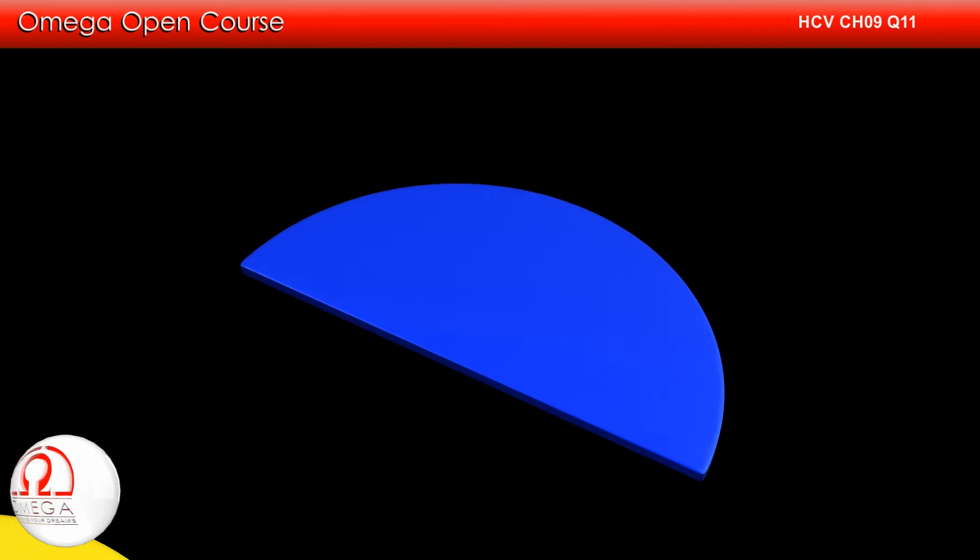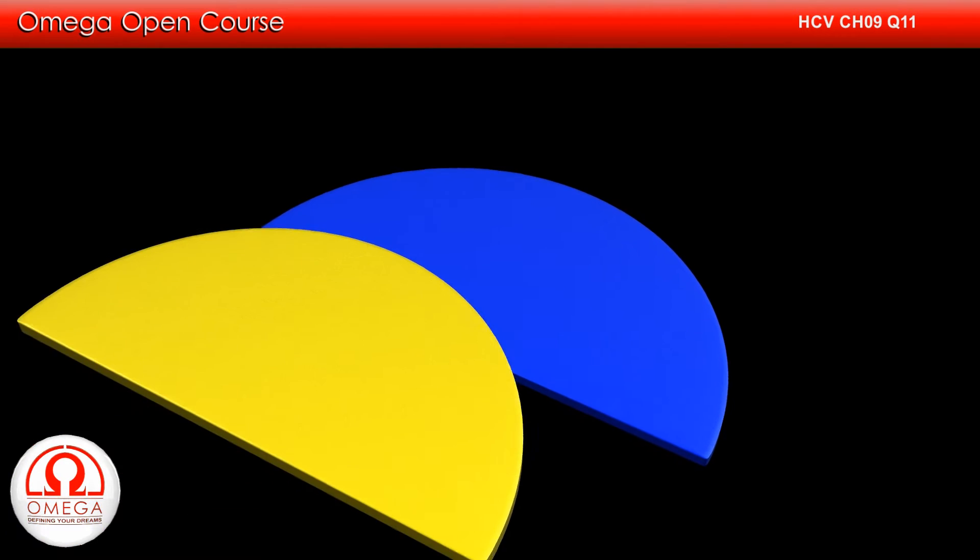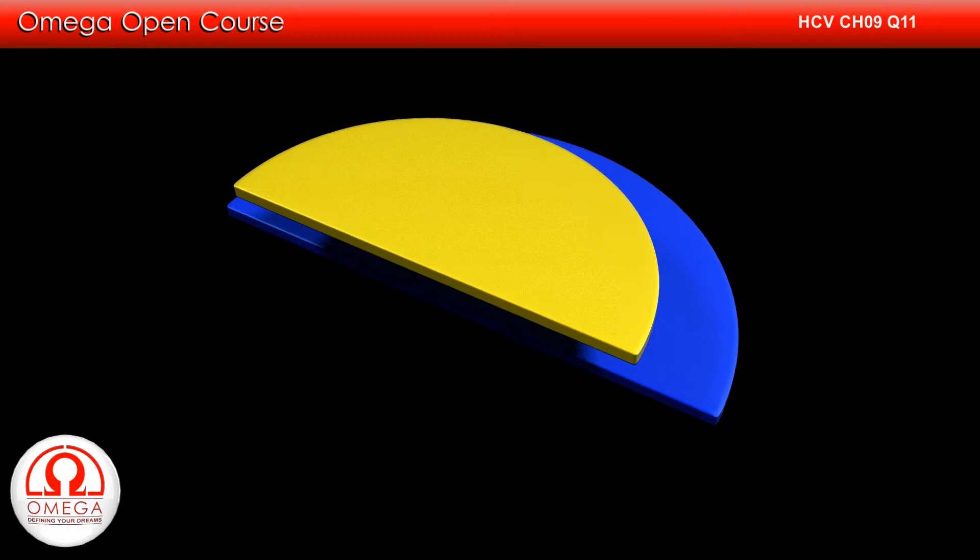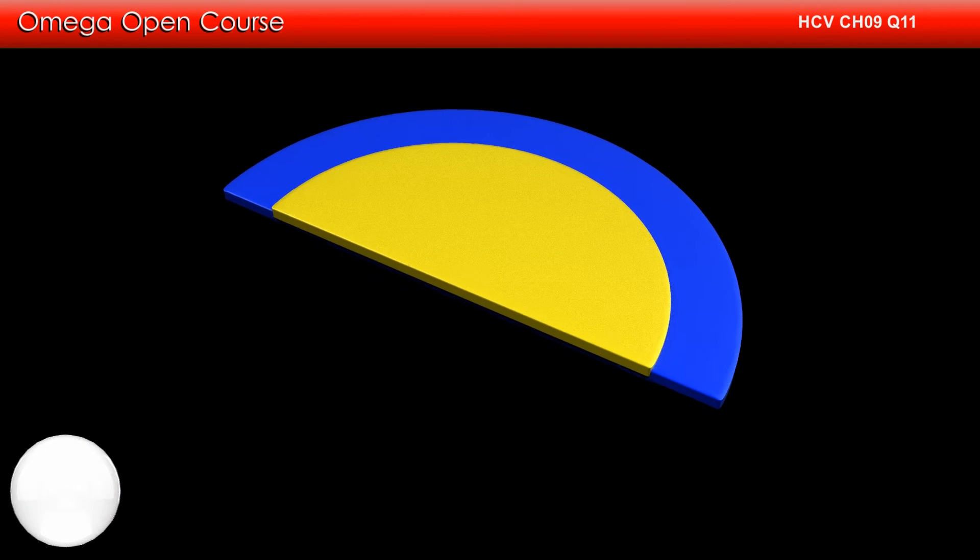Alternatively, this disk can be considered as superposition of a semicircular disk of radius R2 and another disk of radius R1 having equal but negative density.